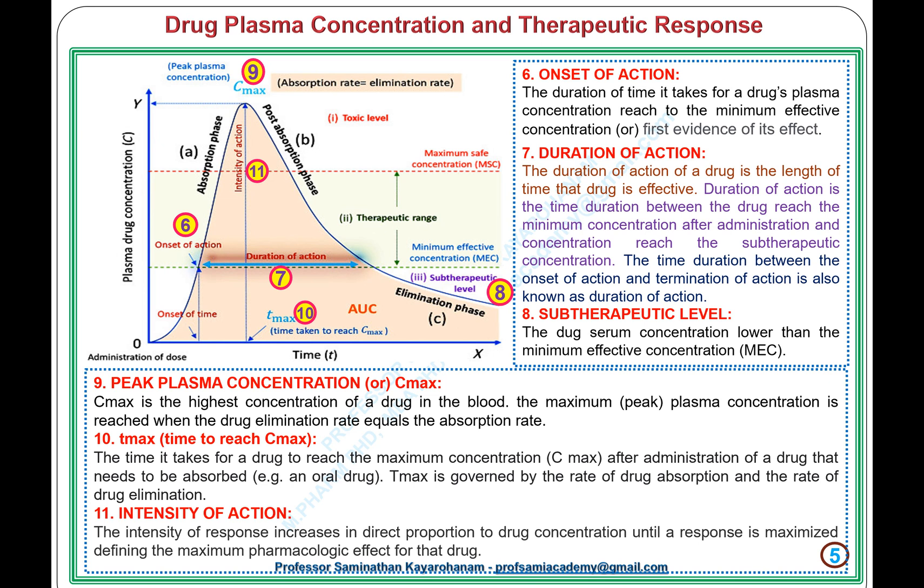The time duration between the onset of action and termination of action is also known as the duration of action. 8. Sub-therapeutic level: the drug serum concentration is lower than the Minimum Effective Concentration (MEC). 9. Peak Plasma Concentration (C-Max): the highest concentration of a drug in the blood. The maximum peak plasma concentration is reached when the drug elimination rate equals the absorption rate.